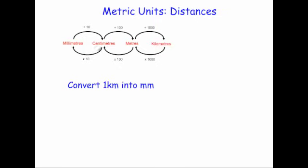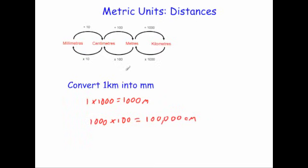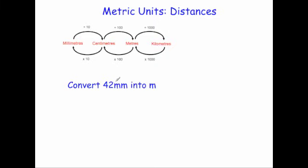Now convert 1 kilometre into millimetres. We go from kilometres to metres to centimetres to millimetres. First, 1 kilometre times 1000 equals 1000 metres. Then 1000 times 100 equals 100,000 centimetres. Finally, 100,000 times 10 equals 1,000,000 — so in 1 kilometre there are one million millimetres.